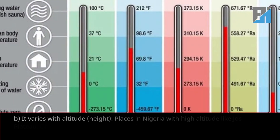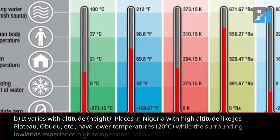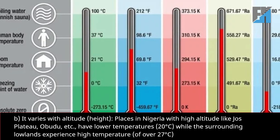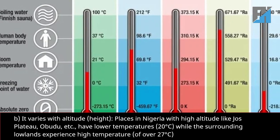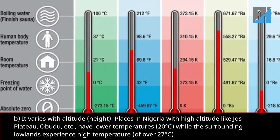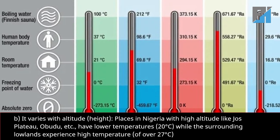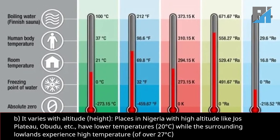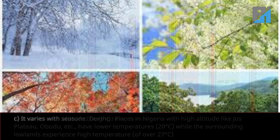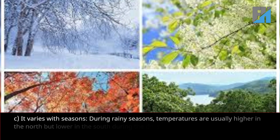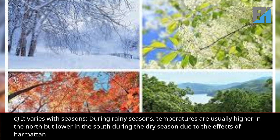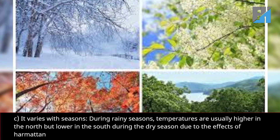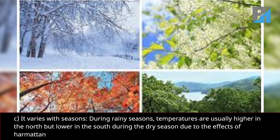Second, it varies with altitude. High places in Nigeria with high altitude, like Jos Plateau and Abudu, have lower temperatures of about 20 degrees Celsius, while the surrounding lowlands experience high temperatures of over 27 degrees Celsius. Third, it varies with seasons. During the rainy season, temperatures are usually higher in the north but lower in the south during the dry season.